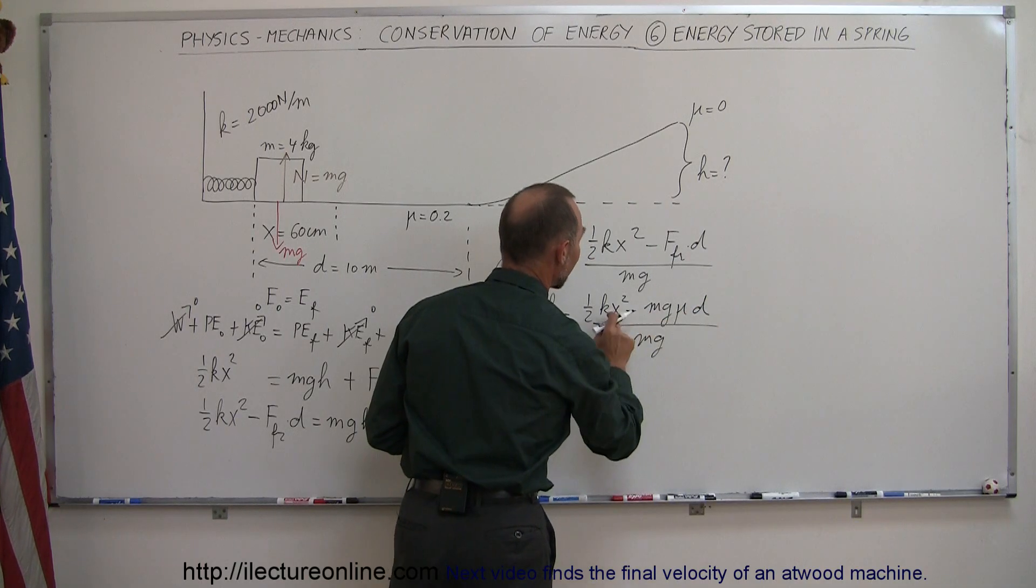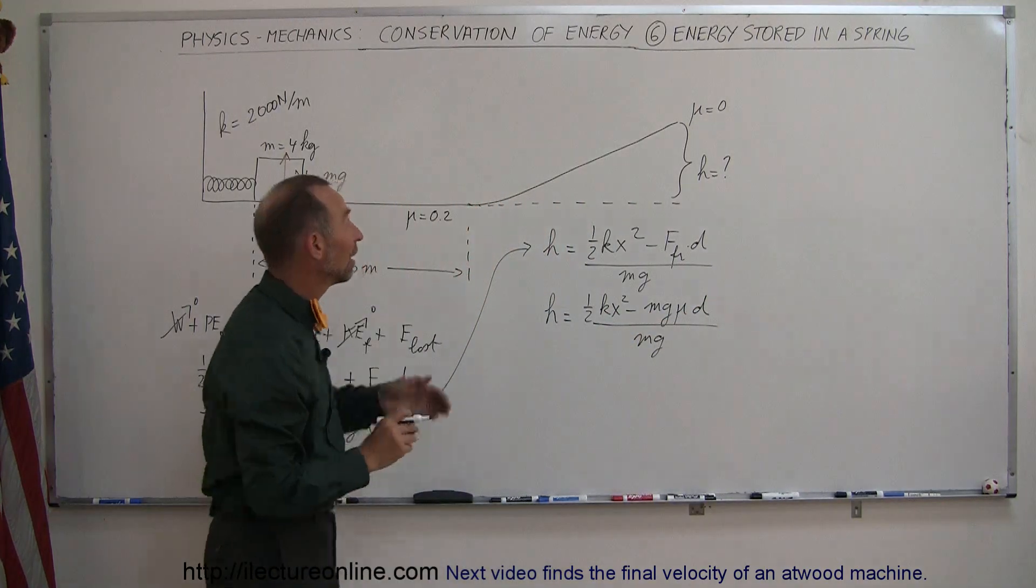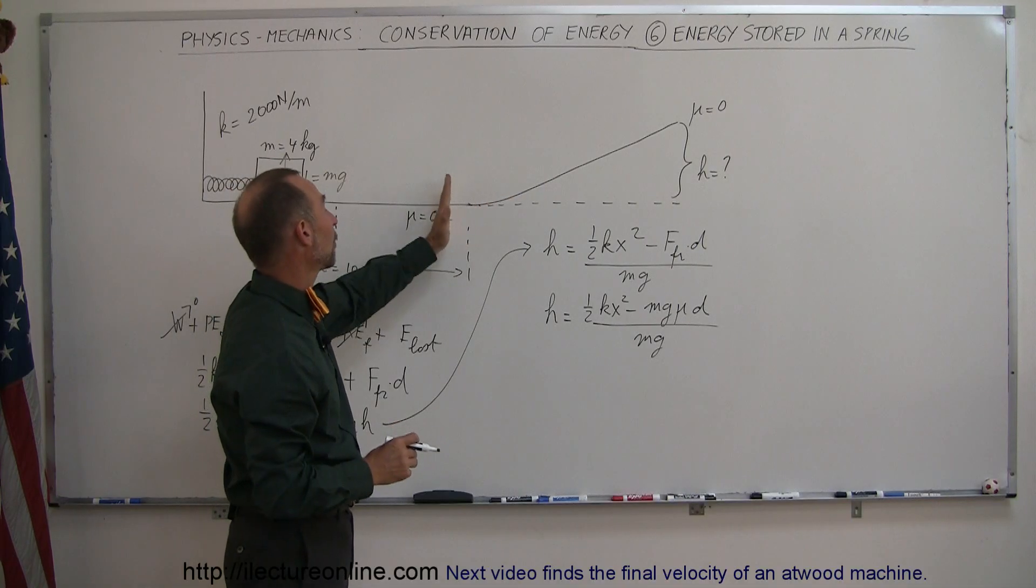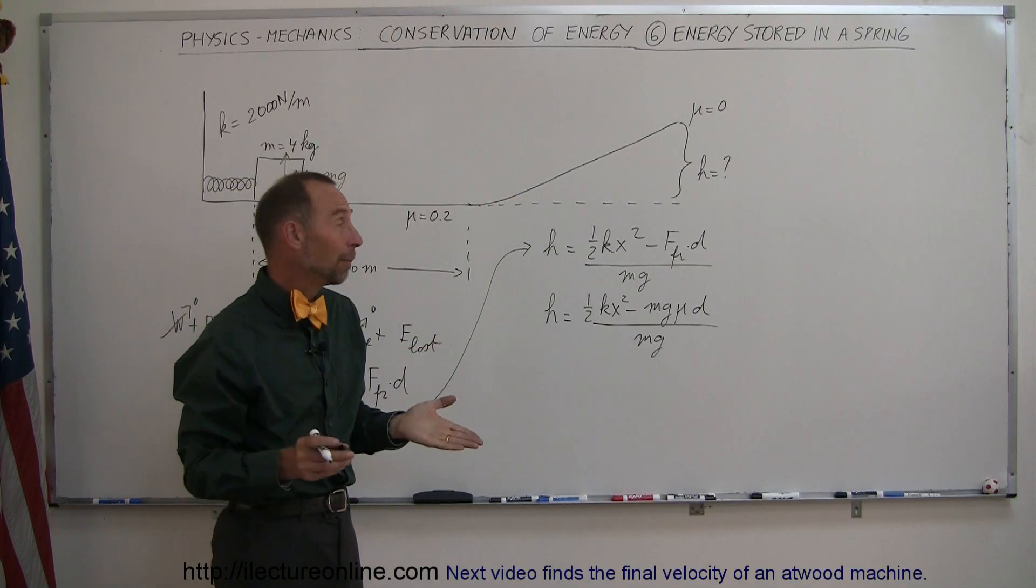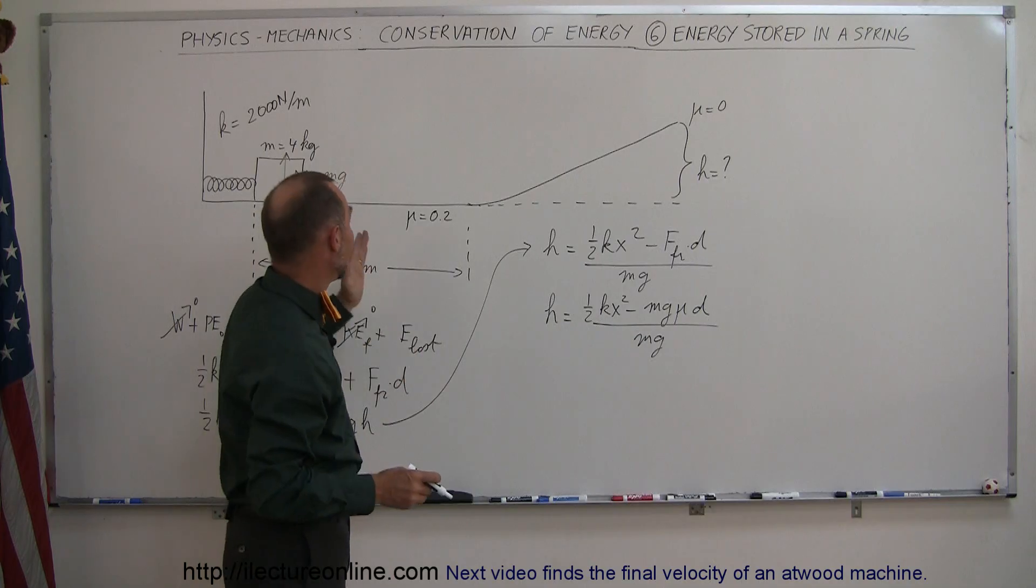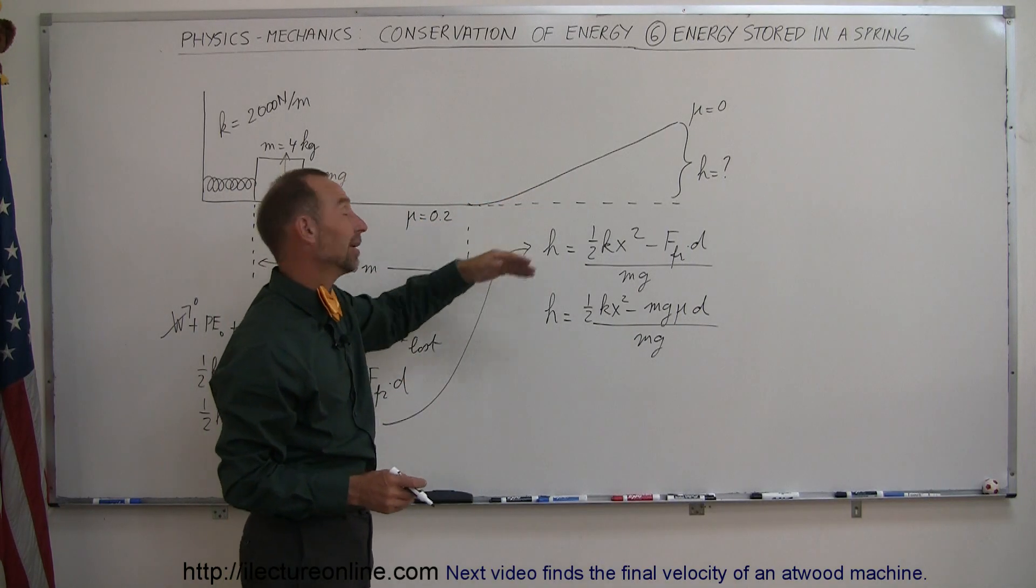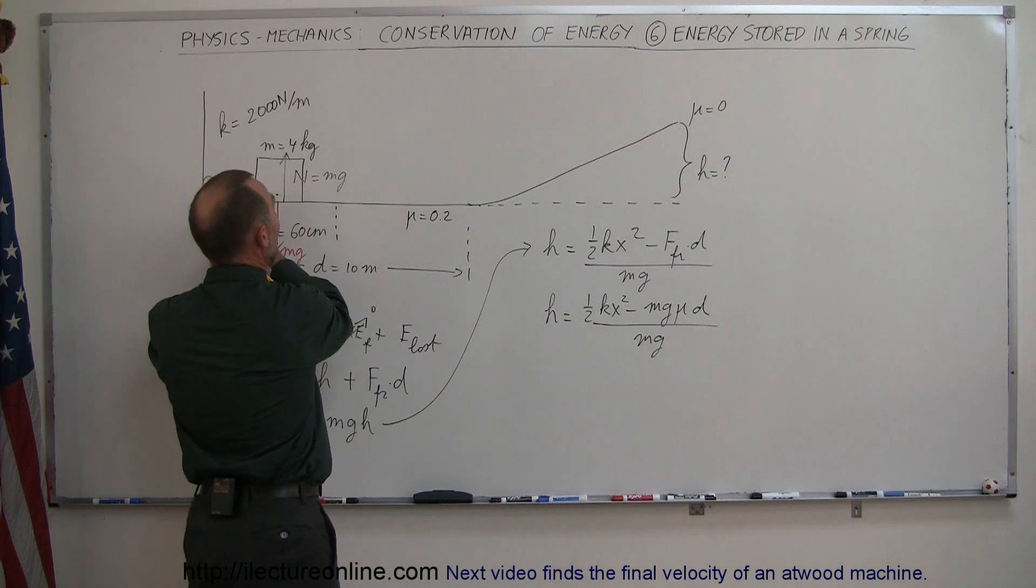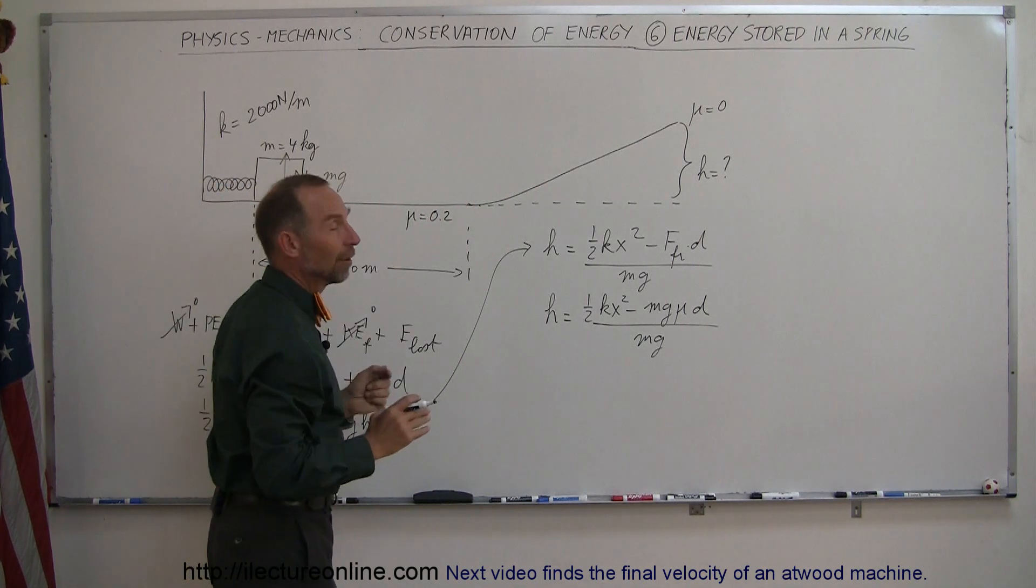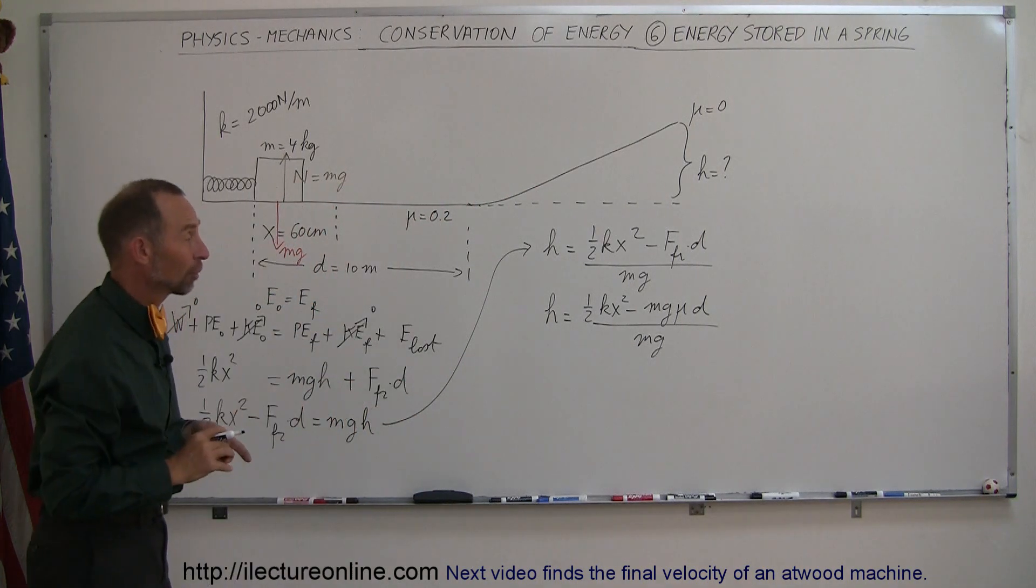which is mg times mu times d all divided by mg. Now notice, if this term is bigger than this, of course, it doesn't even make it to the incline. It will stop prior to making it to the incline. And that could happen. We don't know for sure. If all the energy is lost before it makes it to the incline, of course, h will be zero. And then the question may be how far along this horizontal path does it go before coming to a complete stop.